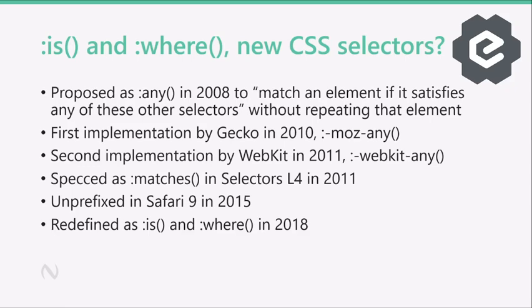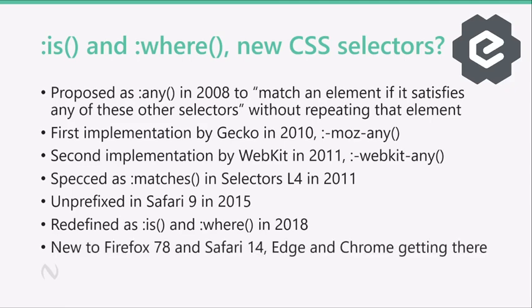But later that year, the first public working draft of Selectors Level 4 came out and it showed up as `:matches()`. The definition is mostly the same — a single pseudo-class that matches one element if it satisfies any of the conditions. This was unprefixed in Safari 9 back in 2015, so Safari has had this feature for five years. But things have been ramping up in recent years, and in 2018 it was redefined as `:is()` and `:where()`. And `:is()` and `:where()` finally landed in Firefox 78 and Safari 14. Microsoft Edge and Google Chrome have implementations in Blink as well, but according to MDN there's a little bit of buggy behavior, so they're still under experimental flags.